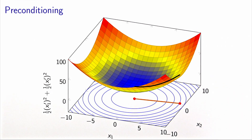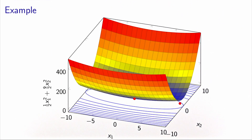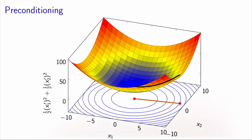This change of variable that increases the speed of the algorithm is called preconditioning: we modify the geometry of the function to make the algorithm faster. If you look at the level curves of the transformed function, you see nice circles. Going back to the level curves of the original function, we see ellipses. The curvature of the original function is very high in some directions and very low in others, whereas after preconditioning the curvature is the same everywhere, and this helps the algorithm greatly.